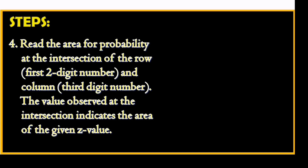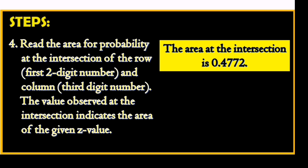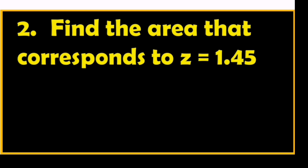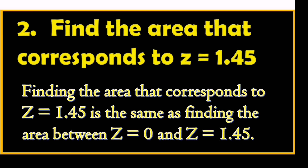The last step is to read the area for probability at the intersection of the row (first two-digit number) and column (third-digit number). The value observed at the intersection indicates the area of the given z-value. The area at the intersection of 2.0 and 0.00 is 0.4772. Example 2: Find the area that corresponds to z equals 1.45, which is the same as finding the area between z equals 0 and z equals 1.45.